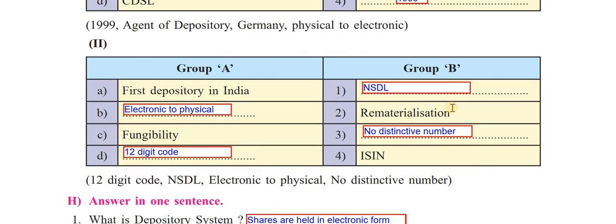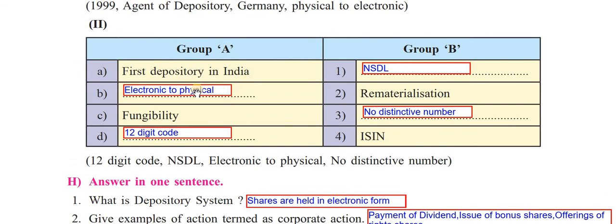Second set of Match the columns: A — first depository in India, definitely NSDL. B — Rematerialization, that is from Electronic to Physical. C — Fungibility, meaning there are no distinctive numbers; remember we had a discussion on this. D — ISIN, it is a 12-digit code. Fix the answers from the brackets into the correct column.